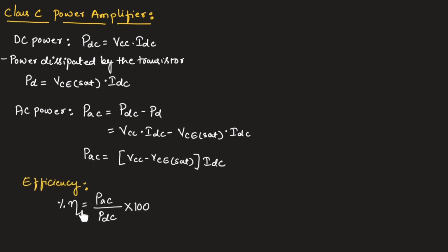Percentage efficiency can be given as PAC, which is output power divided by PDC, that is input power multiplied with 100. If we substitute the values, we will get VCC minus VCE saturation multiplied with IDC divided by VCC into IDC. If we cancel out IDC, percentage efficiency can be given as VCC.